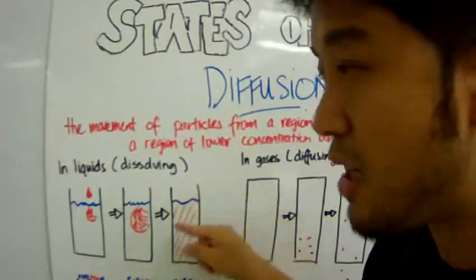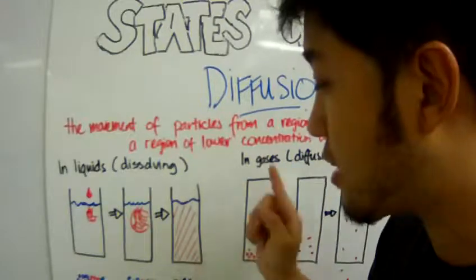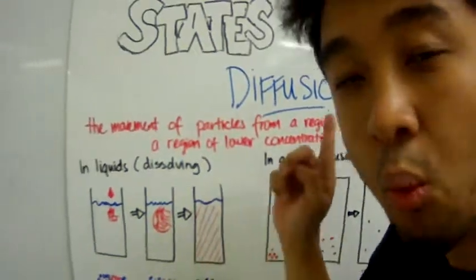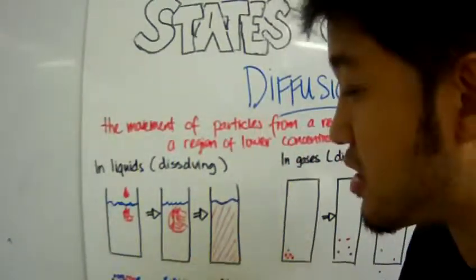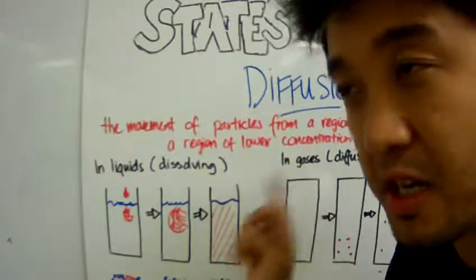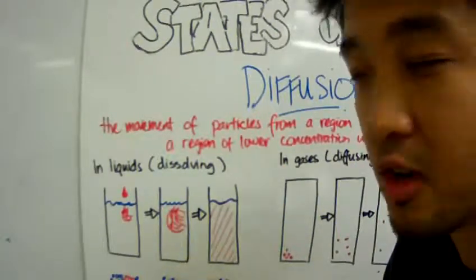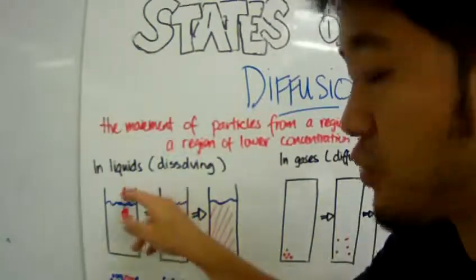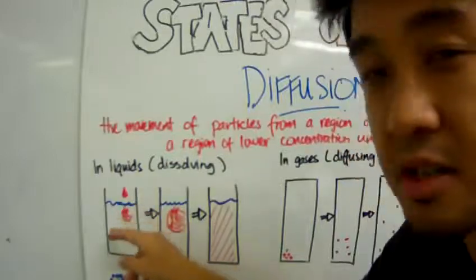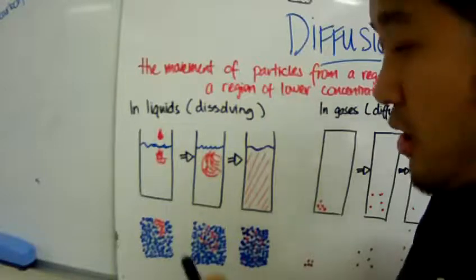Eventually what you end up with is a whole container of red colored dye. Now what is exactly happening when we use the particle level to describe the behavior of this food dye dissolving in this water medium? Let's take a look.